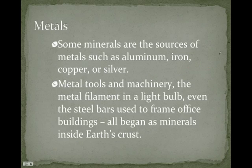Some minerals are the sources of metals such as aluminum, iron, copper, and silver. Metal tools and machinery, the metal filament in light bulbs, and even the steel bars used to frame office buildings all began as minerals inside Earth's crust. Iron is contained in many minerals and makes up a lot of the Earth. What we need to do is remove that metal from the other elements it's combined with.